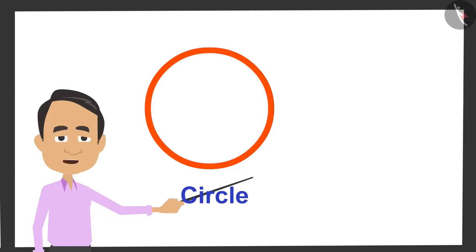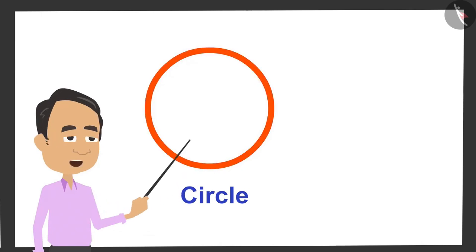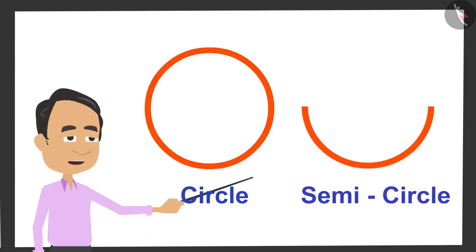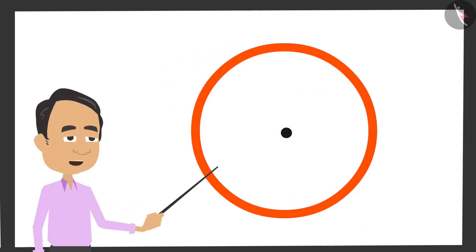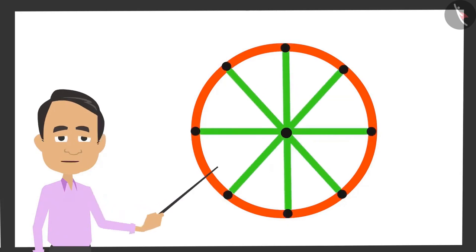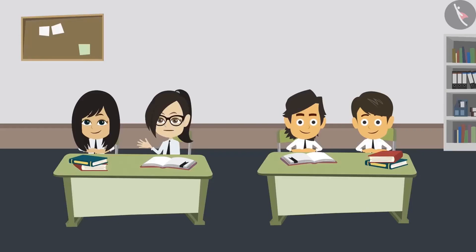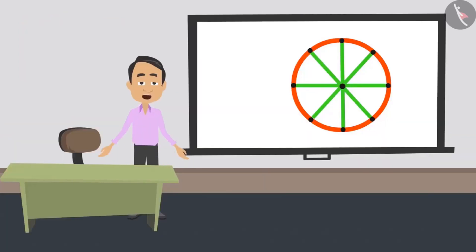The first thing you need to know about a circle is that it is a closed shape, because it has a boundary on all sides. We cannot call this figure a circle. The dot you see in the middle of the circle is the centre of the circle. There are many lines going from the centre to the boundary of the circle and all these lines are equal in length.